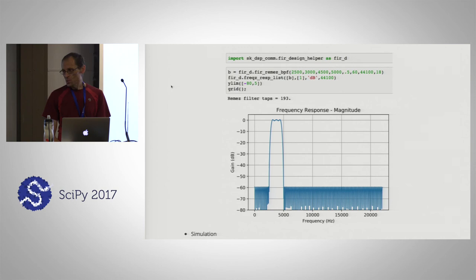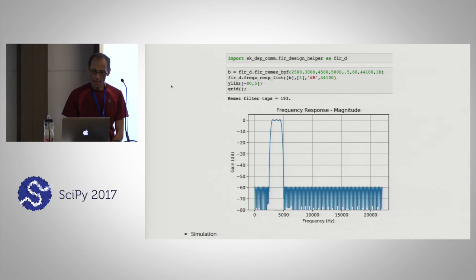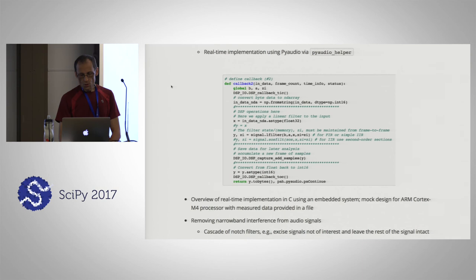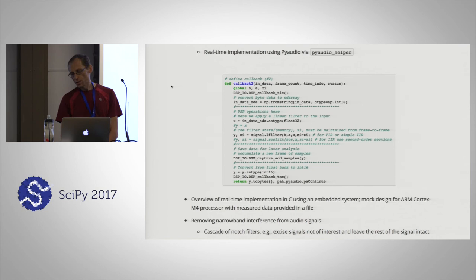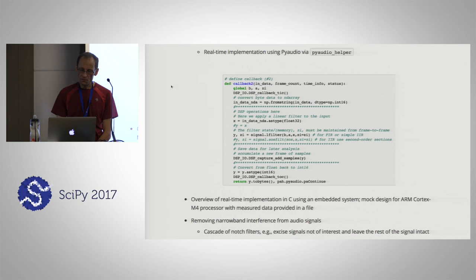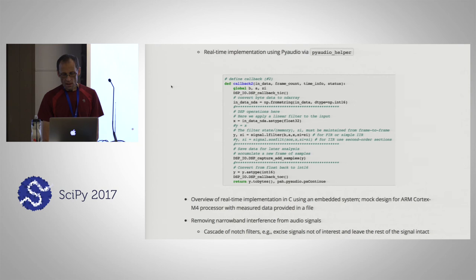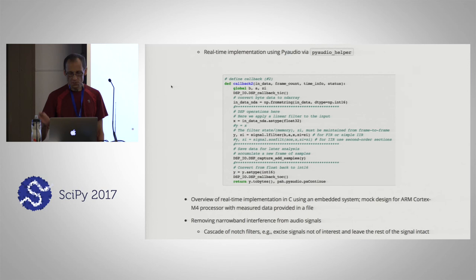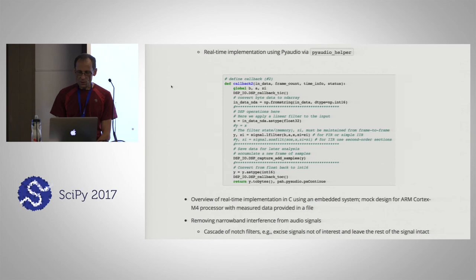It's called an equal-ripple filter because there's an equal amount of ripple across the passband and stop band — half a dB of ripple in the passband and 60 dB of attenuation in the stopband. This is how PyAudio will do it when we get to it. We'll use an object I've created in the PyAudio helper module, which wraps up some of the details of using PyAudio, and what it brings to your Jupyter Notebook interface is just the need to write a callback function.